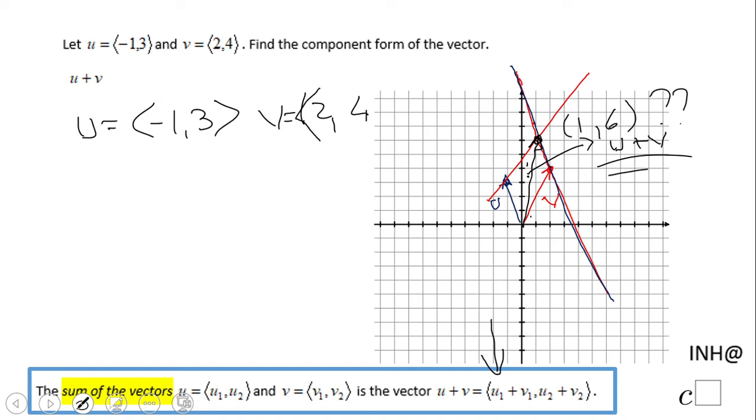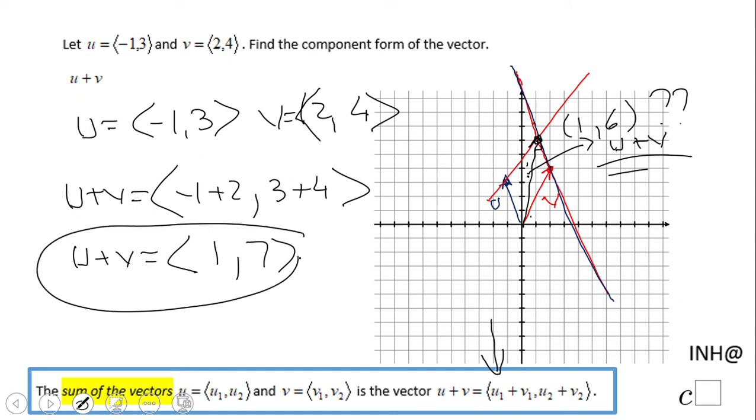u plus v will be nothing else than negative one plus two, three plus four. So u plus v is nothing else than one - negative one plus two is one - three plus four is seven. And that's it.